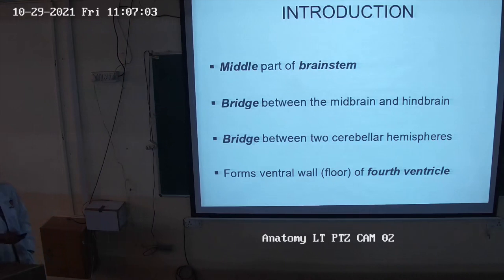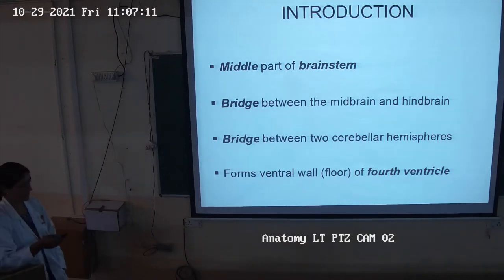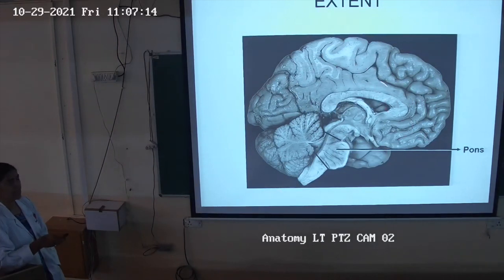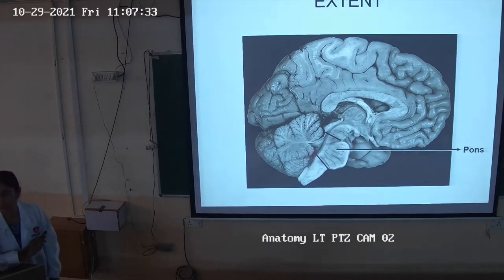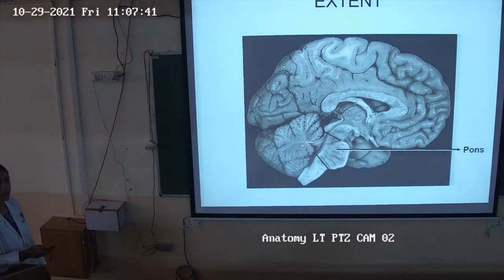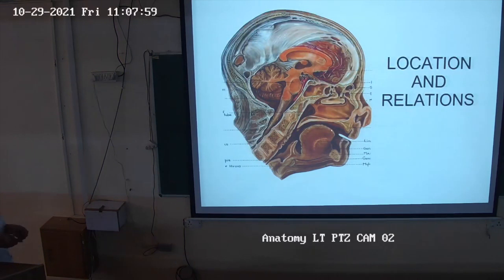The dorsal surface of the pons forms the floor of the fourth ventricle. If you remove the pons, you will see the fourth ventricle. In the sagittal section of the brain, we can see the midbrain, the extent of the pons, and the medulla. The ventral surface faces anteriorly, and the dorsal surface forms the floor of the fourth ventricle — that cavity is the fourth ventricle.